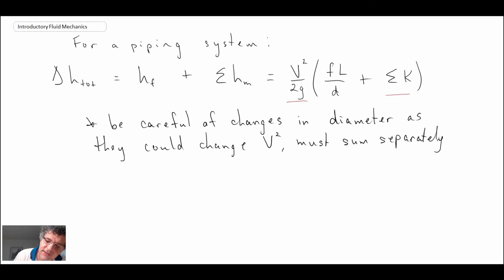So if you have a change in diameter, that's going to lead to a change in velocity, and you must sum those separately because the average velocity in the pipe is going to change. So when we have all of this, if we sum up our total head loss due to both our major losses, or the frictional and then the minor losses, and we put this all together into the steady flow energy equation, let's see what results.